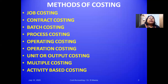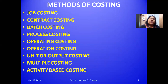First I will discuss the methods of costing. The methods of costing are: job costing, contract costing, batch costing, process costing, operation costing, operating costing, unit or output costing, multiple costing, and activity-based costing.